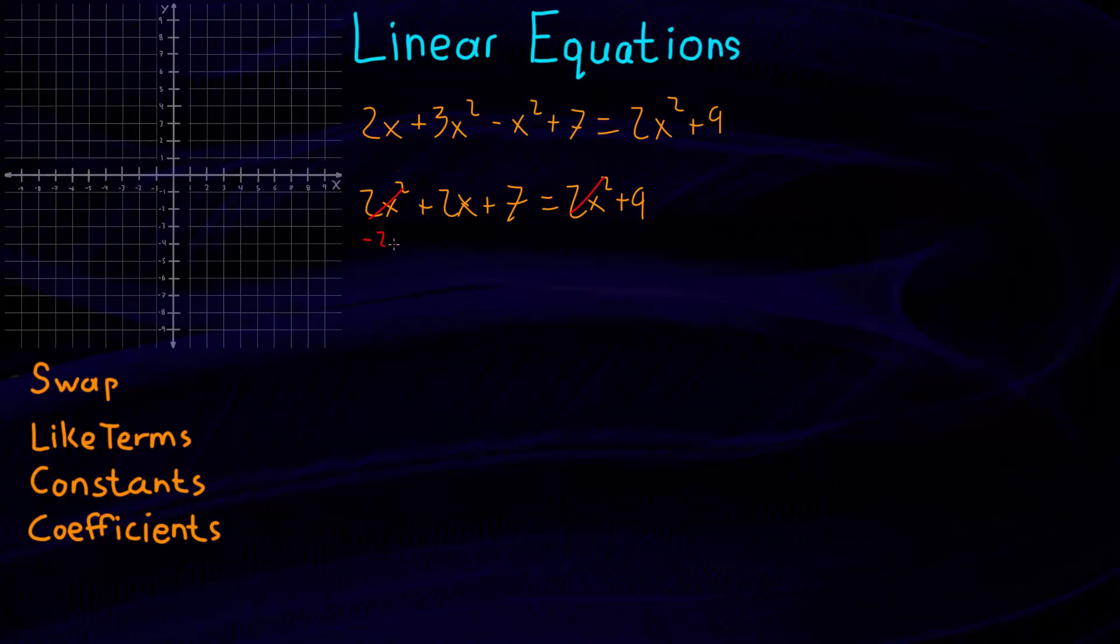So this is basically the same as saying minus 2x squared on both sides. And now this basically became a linear equation. So let's continue on. Now we're at 2x plus 7 equals 9. So now that we've done that and combined like terms, we're looking good. Now we want to isolate away the constants. Well, in this case, it's the 7. So we're going to take 7 away from both sides. And we end up with 2x equals 2, because 9 minus 7 is 2.